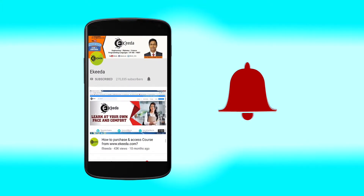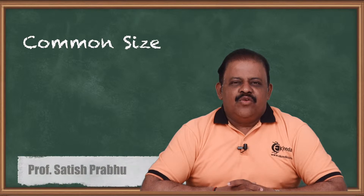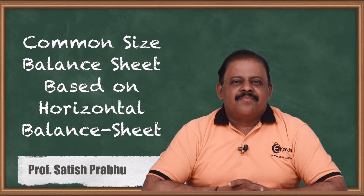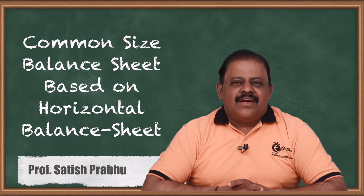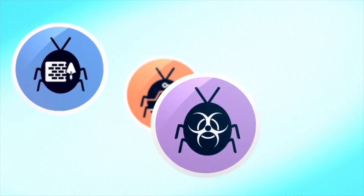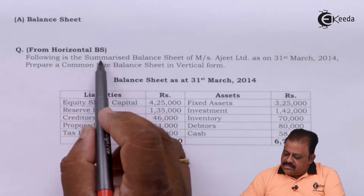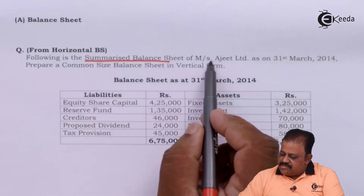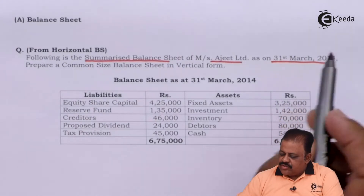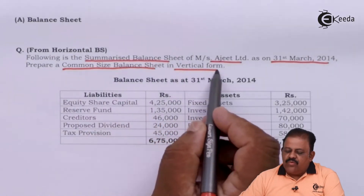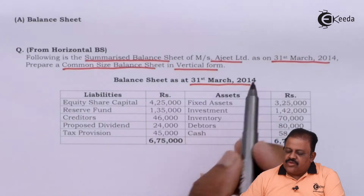Click the bell icon to get the latest videos from Ikeda. Hello friends, let us now discuss one question on common size balance sheet. This will be done with the help of a horizontal balance sheet. Let us go through the question: following is the summarized balance sheet of Ajit Limited as on 31st March 2014. Prepare common size balance sheet in vertical form.